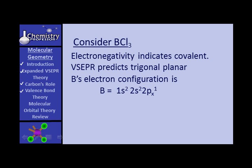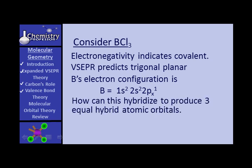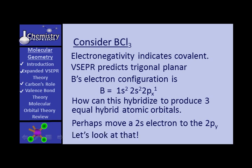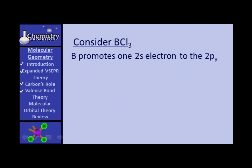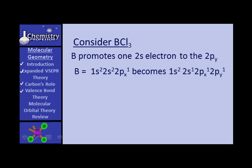How can that electron configuration hybridize to produce three equivalent hybrid atomic orbitals? Perhaps we can move a 2S electron to the 2Py. On the hypothesis that boron promotes one 2S electron to the 2Py, the boron electron configuration becomes 1S2, 2S1, 2Px1, 2Py1.